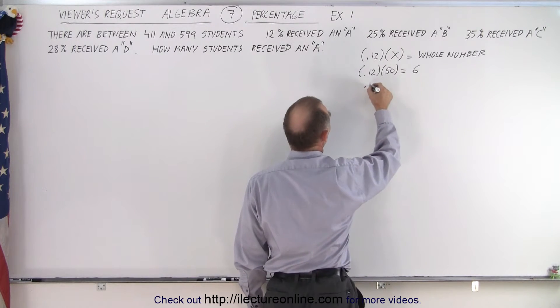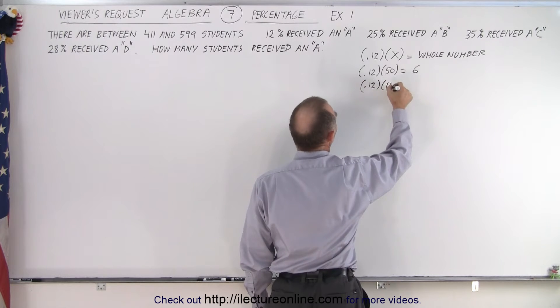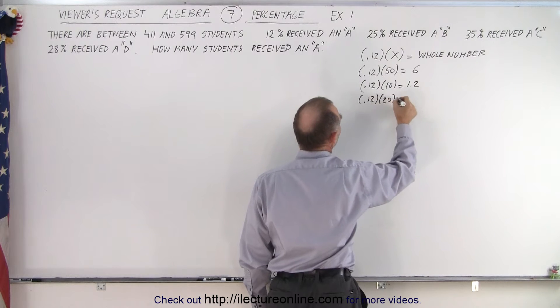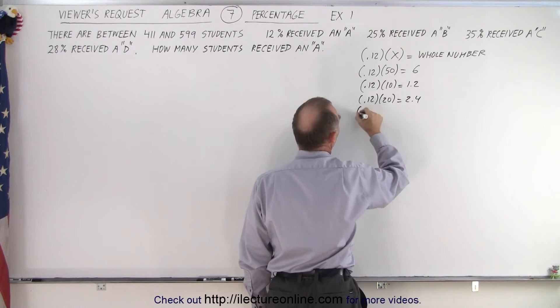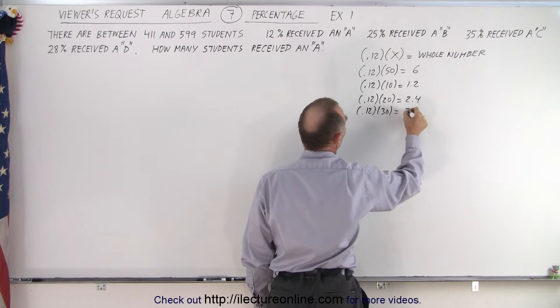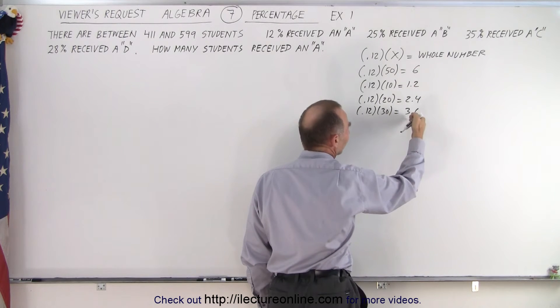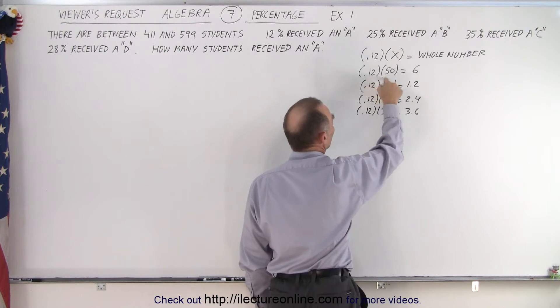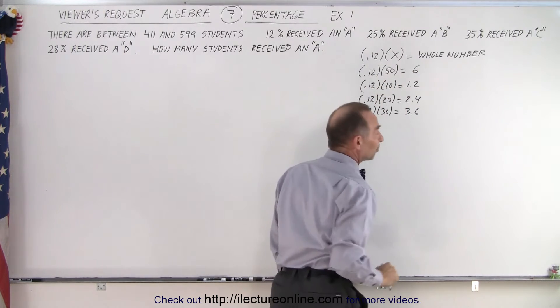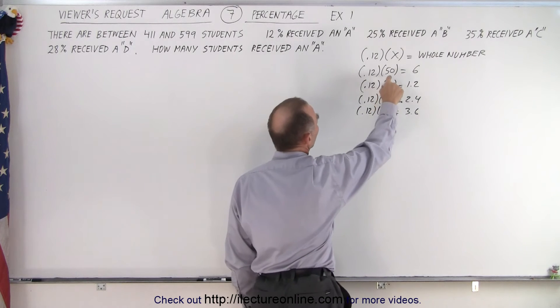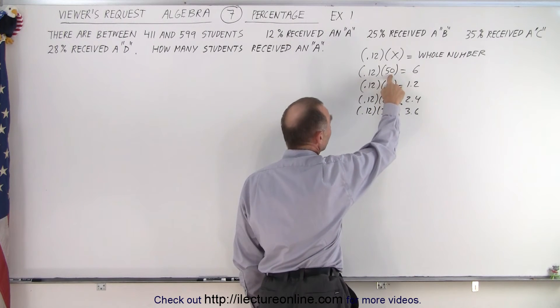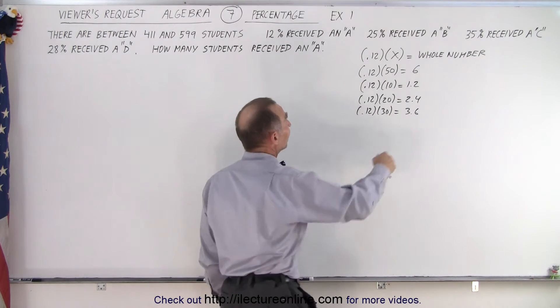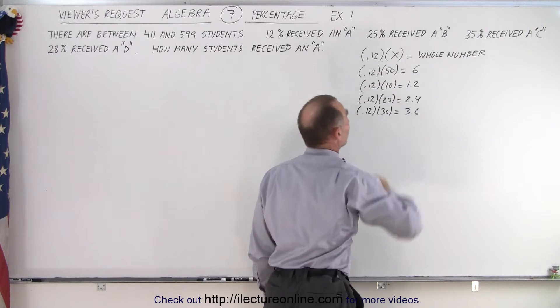For example, if you multiply 0.12 times 10, we get 1.2. 0.12 times 20, we get 2.4. 0.12 times 30, we get 3.6. And you can see the pattern. Eventually, you need a number big enough so that this decimal place turns into a 0. That happens when you multiply times 50, you end up 6.0. So the smallest number of students you can have is 50. You could have 100, 150, 200, 250, 300, and so forth. That satisfies the total number of students that could receive an A.